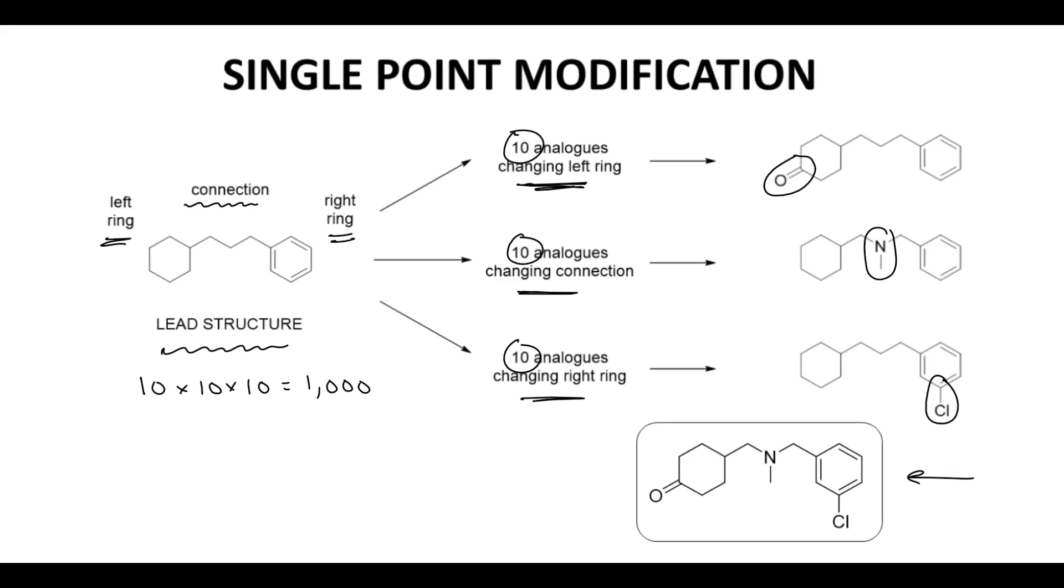So all we did was make 10 compounds, 10 compounds, 10 plus 1. That's 31 molecules instead of making all 1000. This is the idea of single point modification. You break up the molecule into parts and you make single modifications to each part.